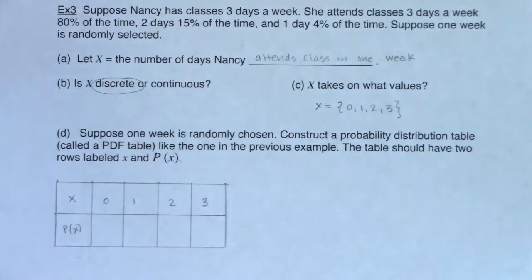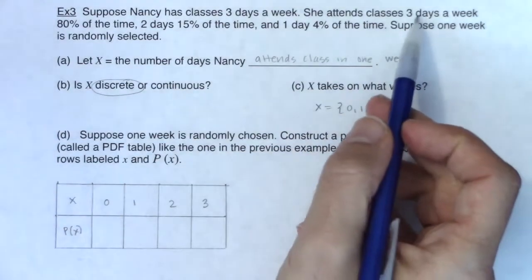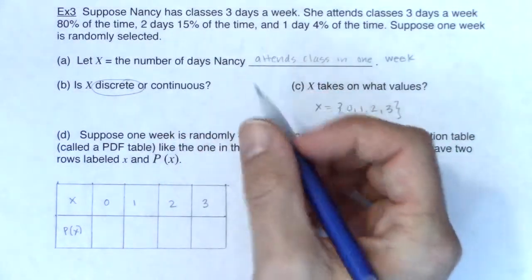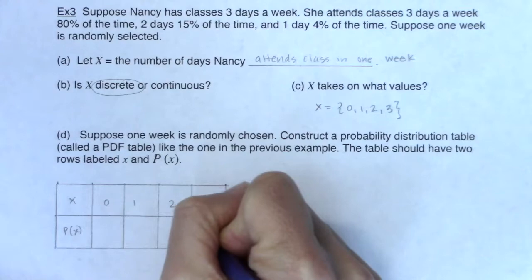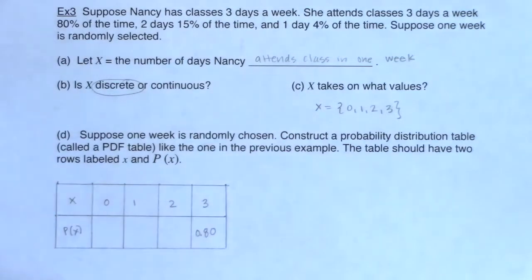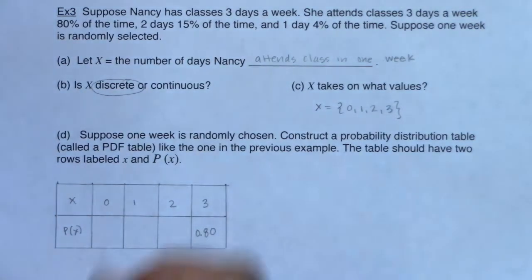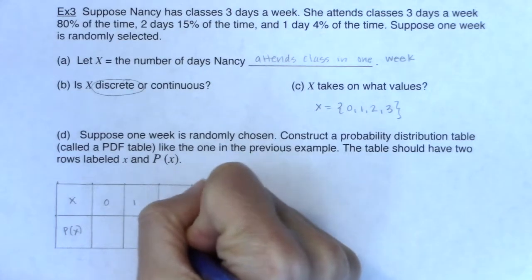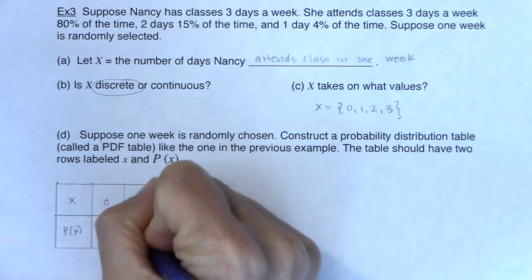Now this is one of those versions of the problem where I had to create the table. It wasn't given to me, but we have enough information to do it. So let's go back to the original problem. It says she attends classes three days a week, 80% of the time. So I'm going to put 80% under here. You can see she attends class two days a week, 15% of the time. One day a week, 4% of the time.